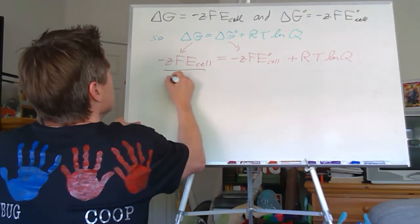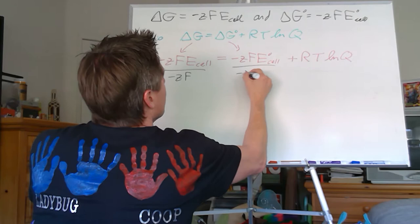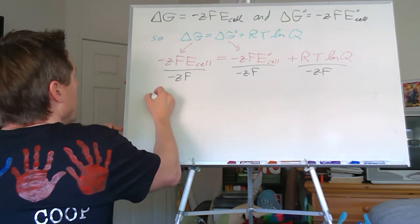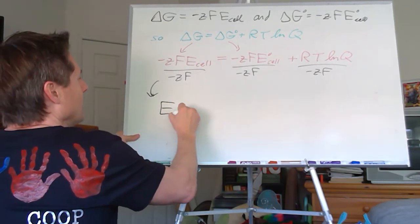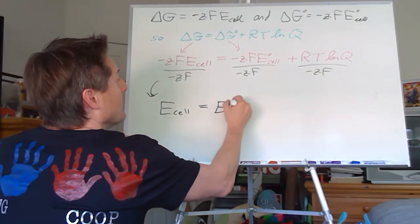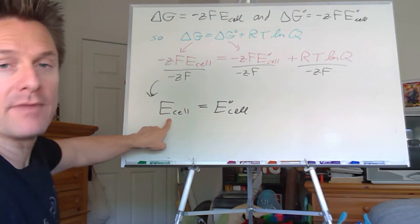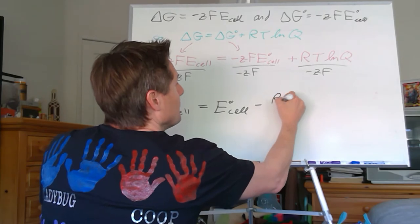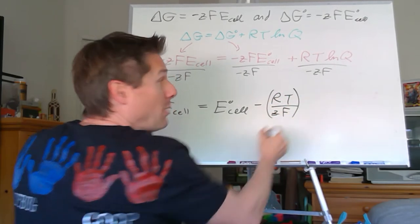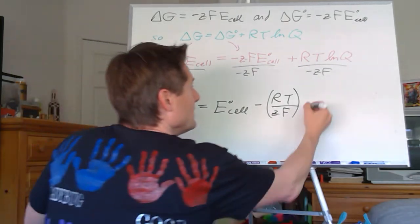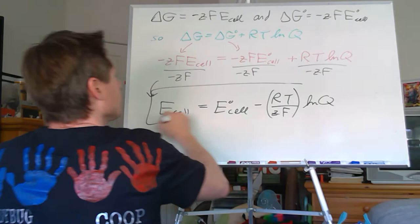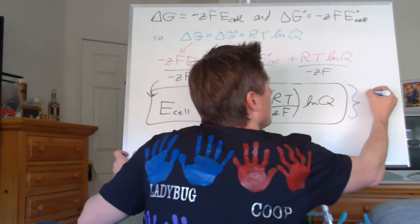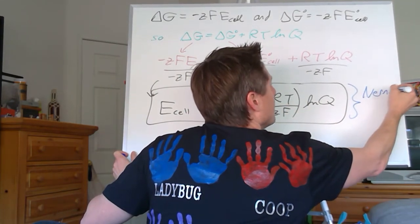Let's divide through by negative zF across the board. What are we going to end up with? We're going to get: E-cell equals E°-cell at standard conditions minus RT over zF — you see that term pop up a lot — times the natural log of the reaction quotient Q.